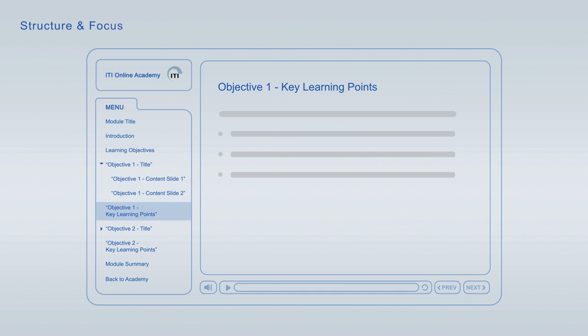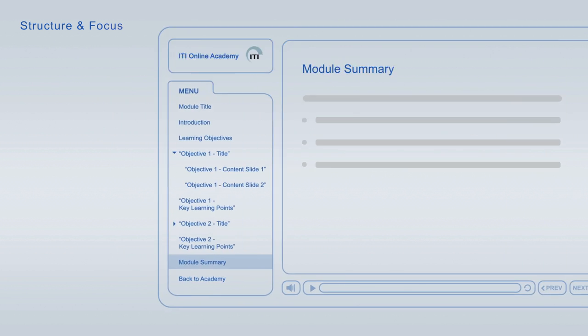Each of the learning objectives is discussed in an individual topic chapter that concludes with a list of its key learning points. The summary at the end of each module combines the major key learning points across all learning objectives for final repetition and focus.